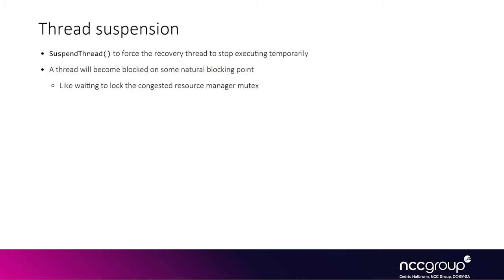There is a separate API exposed on Windows called SuspendThread. You can basically cause a thread to stop running at the next available blocking point. Inside the kernel, these are typically things like mutexes where you have to wait for some resource to become available anyway. The kernel is very likely to suspend the recovery thread if we are able to congest the mutex by querying the description field from another thread and then call SuspendThread.